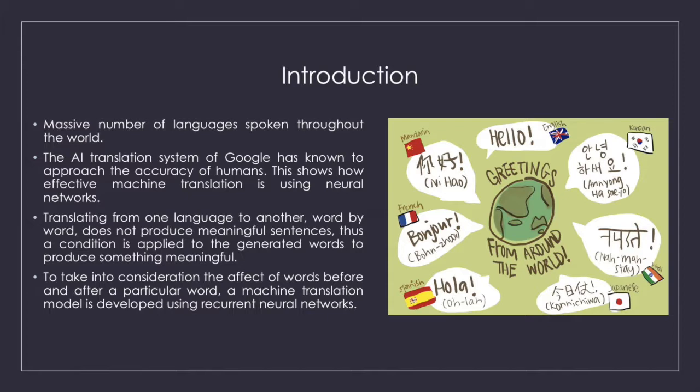Translating from one language to another, word by word, does not produce meaningful sentences. Thus a condition is applied to the generated words to produce something meaningful. To take into consideration the effect of words before and after a particular word, a machine translation model is developed using recurrent neural networks.